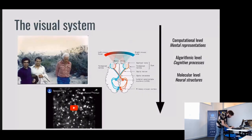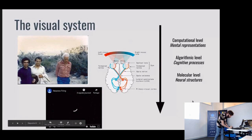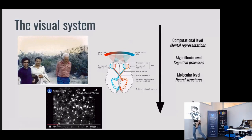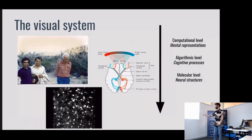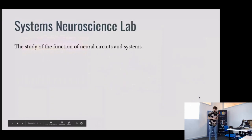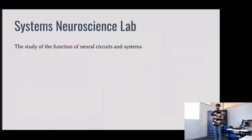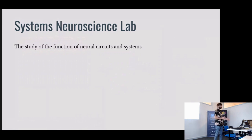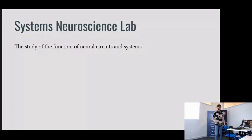Here I have a small video — if you've never seen it, these are real neurons in the visual cortex firing in response to an image. In the lab where I work, we study the function of neural circuits in systems. The reason I gave this introduction about levels of analysis is that in our lab we try to look at systems at all three different layers.